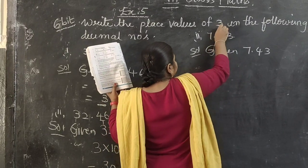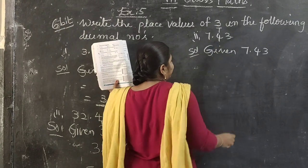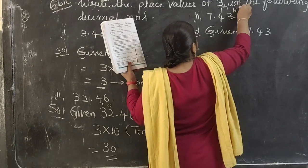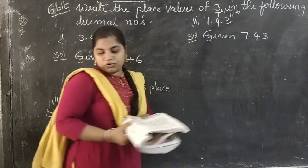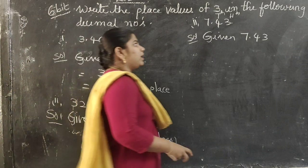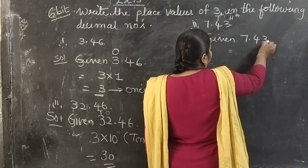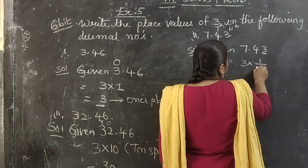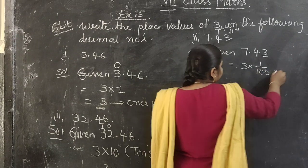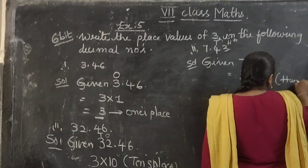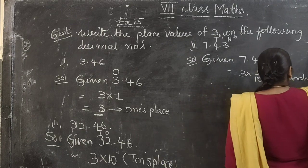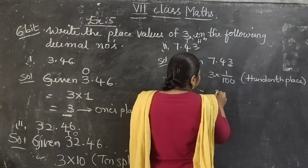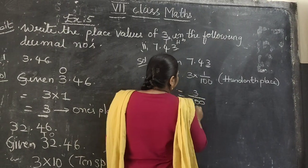Point the place where it starts from 10th place. This is 10th place and this is 100th place. So 100th place value, how we would write here, is 3 by 100. So we will write this: 3 is in 100th place. So this is 1 by 100, this is 100th place. So we can write this as 3 by 100.